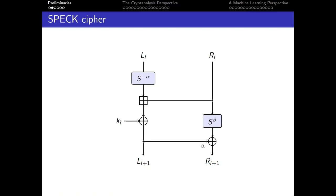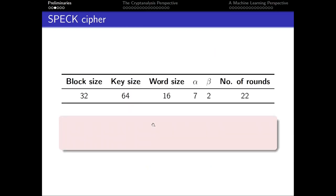This is the round function of the SPECK cipher. SPECK is an ARX cipher and has a Feistel-like structure. The S functions here represent the bitwise rotations. Alpha and beta are parameters that change depending on the block size. We are focusing on the smallest cipher in the SPECK family, fixing the block size to 32, and therefore alpha and beta to be 7 and 2.